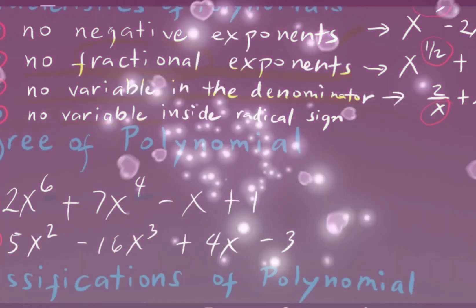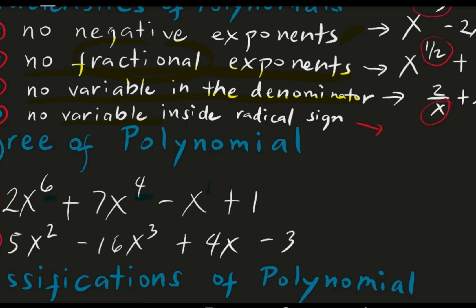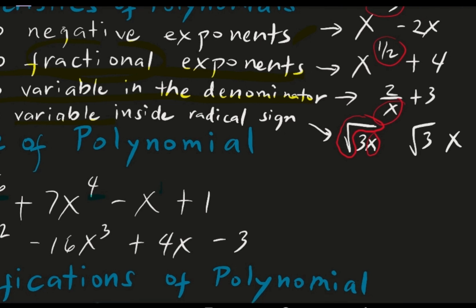Let's proceed to characteristic number 4: there must be no variable inside the radical sign. For example, square root of 3x — the variable x is inside the radical sign, so that is not a polynomial. But if you have square root of 3 and x is outside the radical sign, that is considered a polynomial.